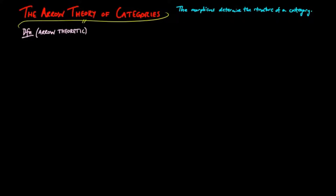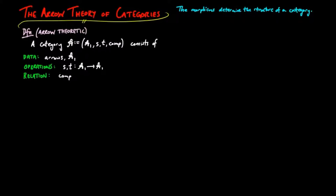The arrow theory of a category states that a category A consists of arrows, denoted by A1, as the data, two operations called source and target, denoted S and T, which takes an arrow to an arrow, and a relation called composition on triples of arrows. Again we write FG equals H for comp GFH. This structure is subject to the following axioms.